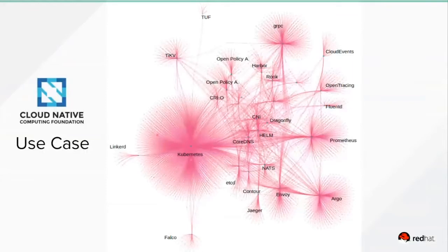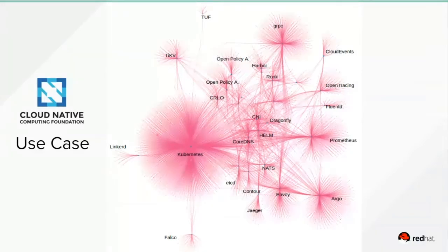The use case for today is the Cloud Native Computing Foundation. These are the graduated and incubated projects when we were doing this analysis, a couple of months ago — a few others may have graduated since then. The key here is really taking a look at the connectedness in these projects. From our perspective, every one of these projects impacts on OpenShift and Kubernetes, so staying aware of them and seeing the connections is critical.